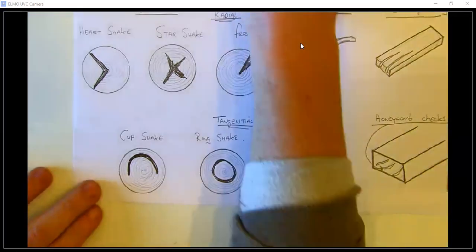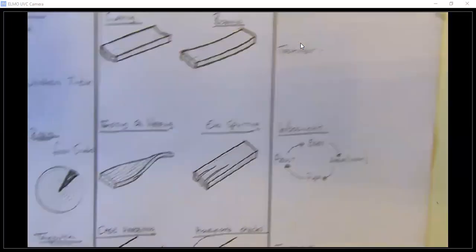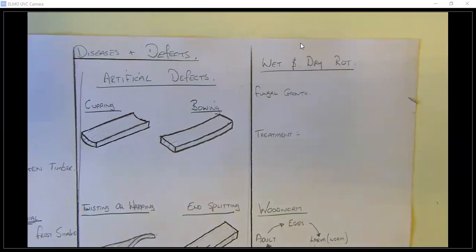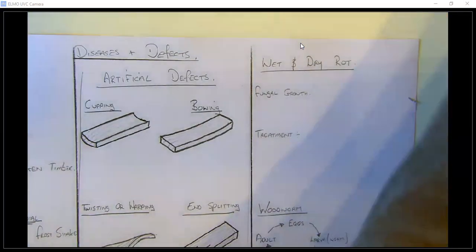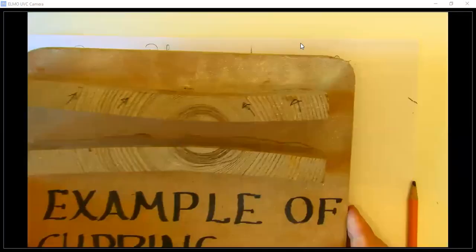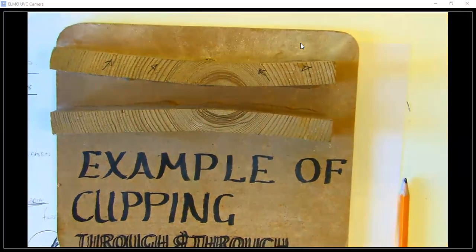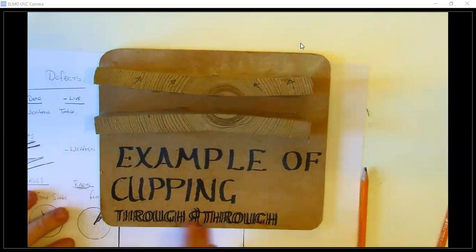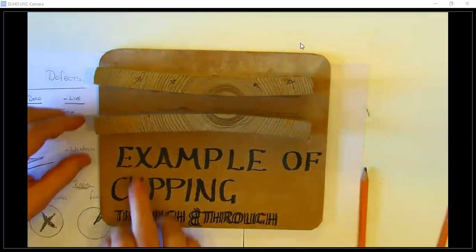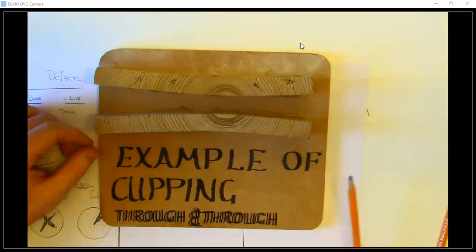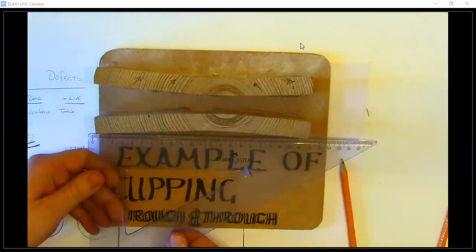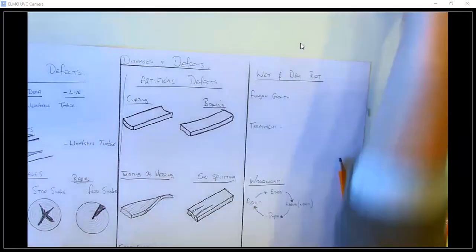Those defects we just discussed are all natural defects. Now we're going to look at artificial defects. The first one is cupping. We've seen cupping already — this is an example from true and true sawing, a type of conversion that leads to cupping. If you put a straight edge along the plank, you can see the large bow or cup within it. That's an example of cupping.